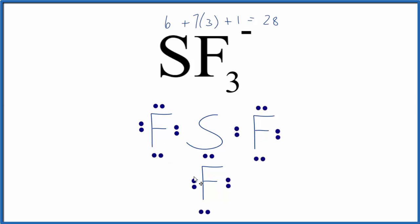We've used 24 valence electrons but we have 28 valence electrons for the SF3- Lewis structure, so we're going to need to put those additional two pairs of electrons on the sulfur.